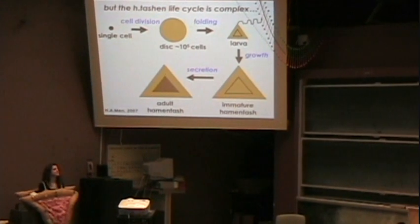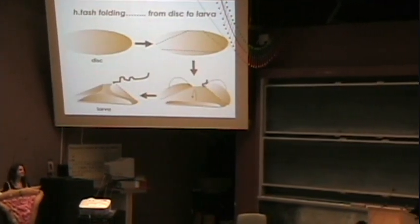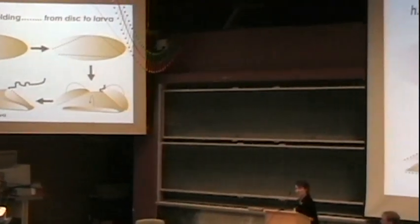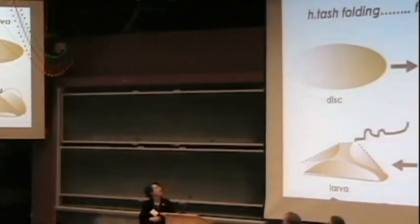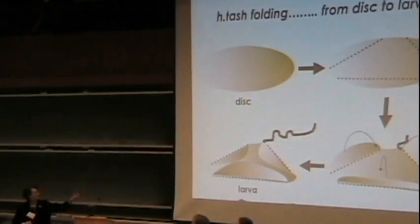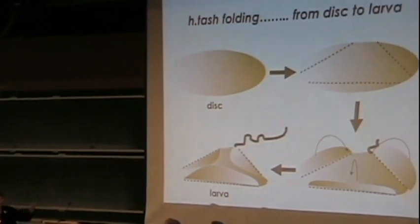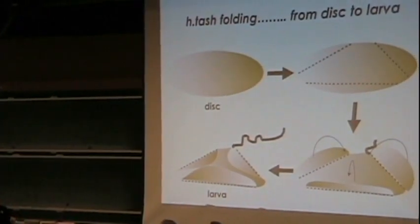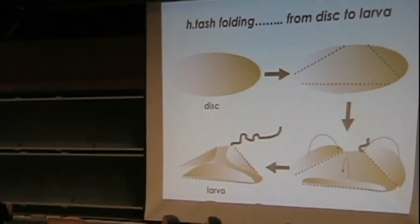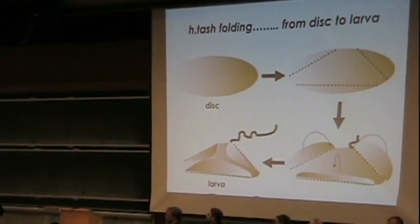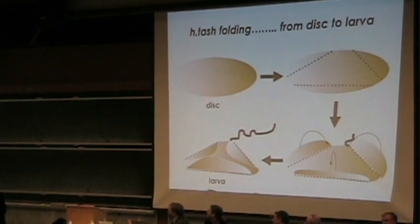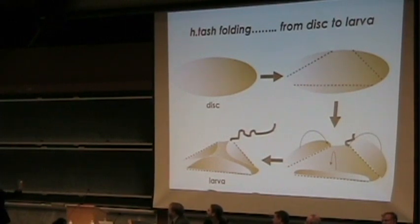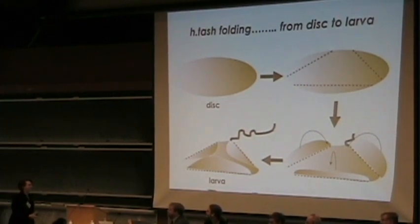And then we have the adult Hamantash. Here is the Hamantash folding from disc to larva. You can see as the folding takes place, the rudimentary tail growing out to form the larva with its tail and its motility.